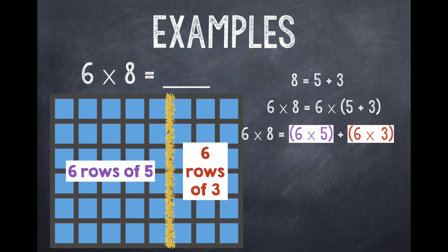So I can start with 6 × 5. And I can skip count by 5's: 5, 10, 15, 20, 25, 30. So 6 × 5 equals 30. Then for 6 × 3, I can skip count by 3's: 3, 6, 9, 12, 15, 18. So 6 × 3 equals 18.